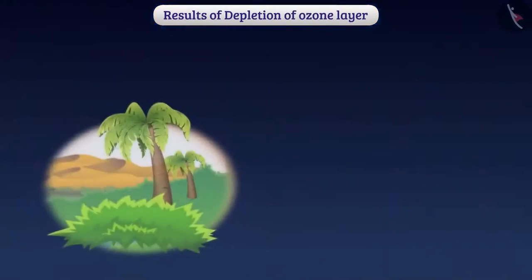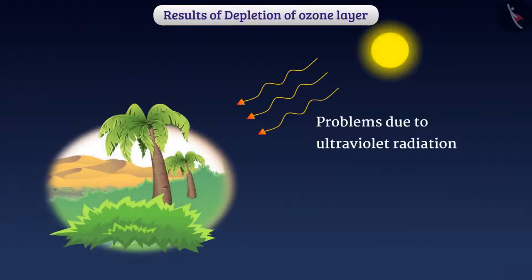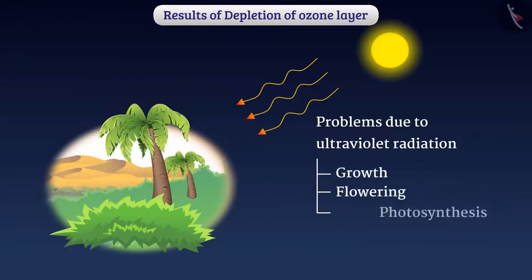Due to ultraviolet radiation in the terrestrial plants, problems in growth, flowering and photosynthesis will arise. This will harm the entire environment.